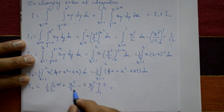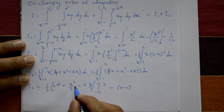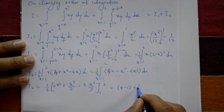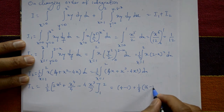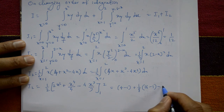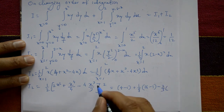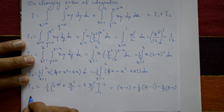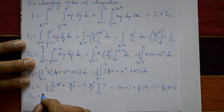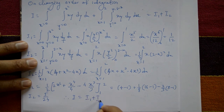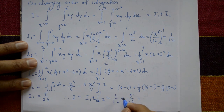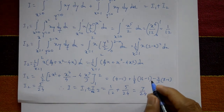Integrating: I2 = (1/2)[2x² − 4x³/3 + x⁴/4]₁². Applying limits: upper limit x = 2 gives 8 − 32/3 + 4; lower limit x = 1 gives 2 − 4/3 + 1/4. Simplifying gives I2 = 5/24. Therefore, I = I1 + I2 = 1/12 + 5/24 = 7/24. This is the required solution.